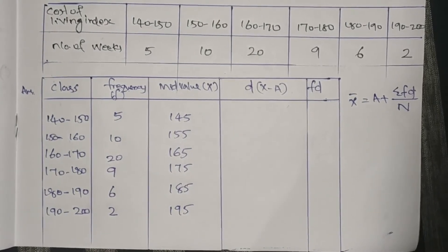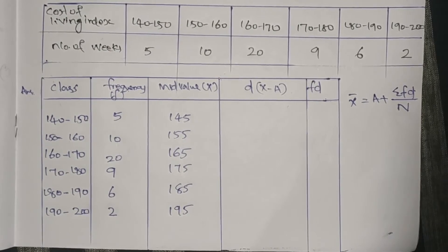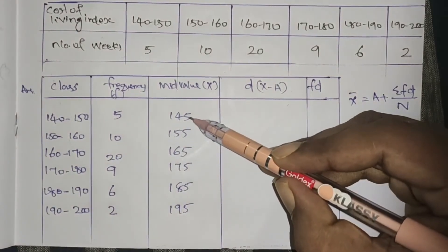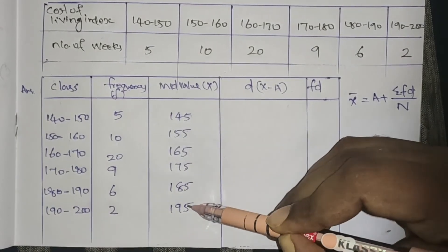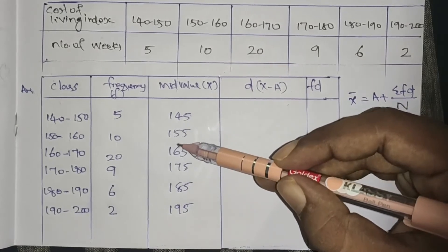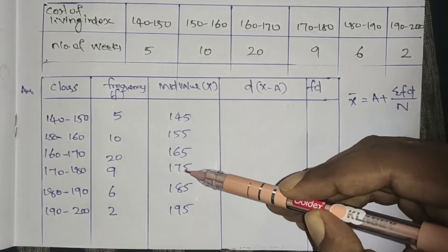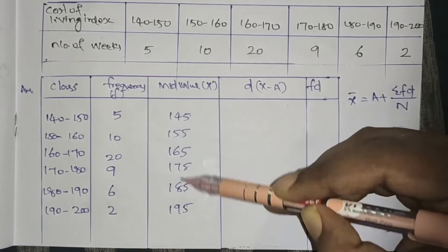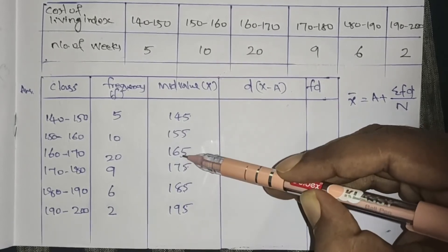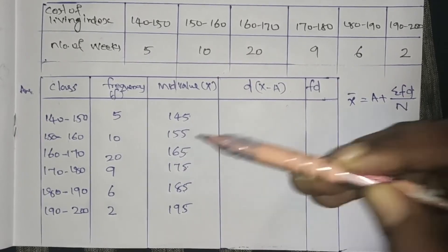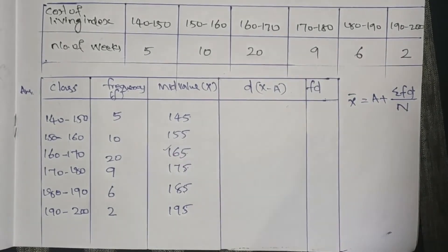We need to select an assumed mean from the mid values. There are 6 mid values: 145, 155, 165, 175, 185, 195. The middle value is 165 or 175, so we select 165 as the assumed mean A.